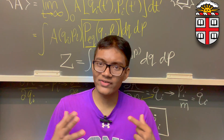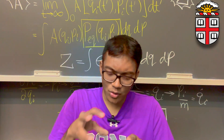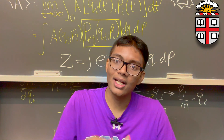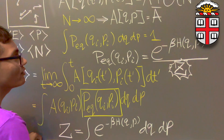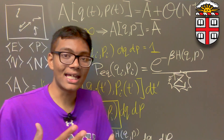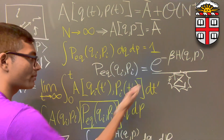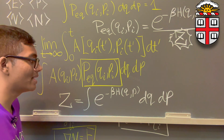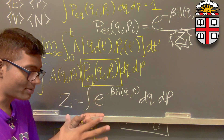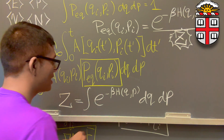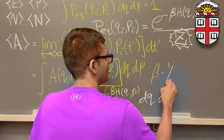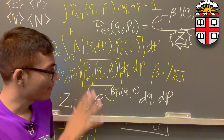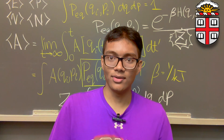That's it for the first lecture of statistical mechanics. In this lecture, we figured out how to extract the position and momenta — the general equations of classical mechanics — from the Hamiltonian. Then we looked at how to figure out the values for an observable A, starting with the Boltzmann distribution, where the partition function is the integral of the Boltzmann factor e to the minus beta H, where H is the Hamiltonian — the total energy of the system, kinetic plus potential. Keep in mind that beta is usually written as 1 over kT.